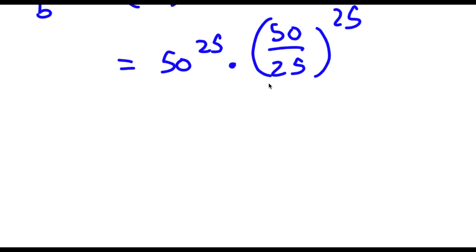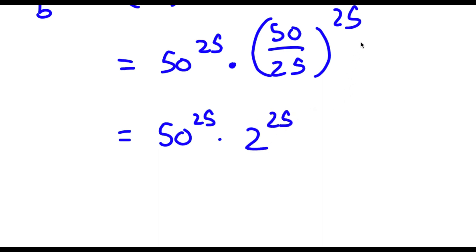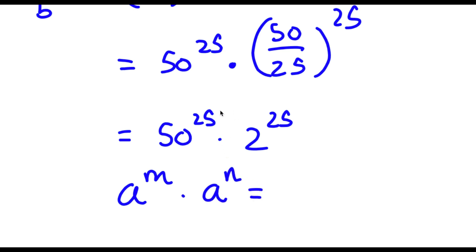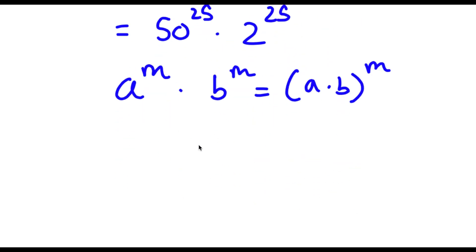Now 50 over 25 is the same thing as 2. So this becomes 50 to the power of 25 times 2 to the power of 25. And if I have something in the form a to the power of m times b to the power of m, this equals (a times b) to the power of m. So this gives me 50 times 2, to the power of 25.